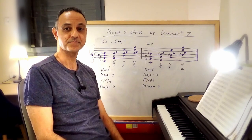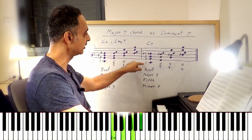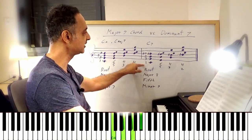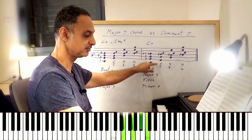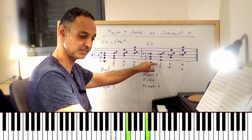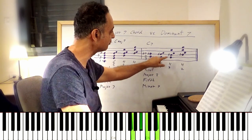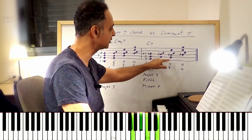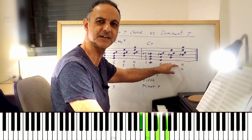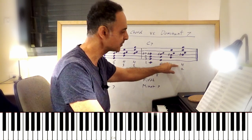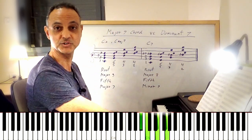You can do the same with the C7 chord. Root position in C7, then the 1st inversion is 6-5, the 2nd inversion is 4-3, and the 3rd inversion is 4-2 — sometimes also called just 2.